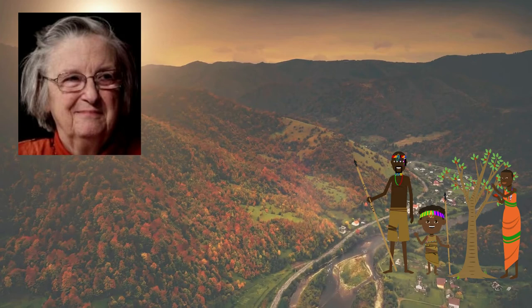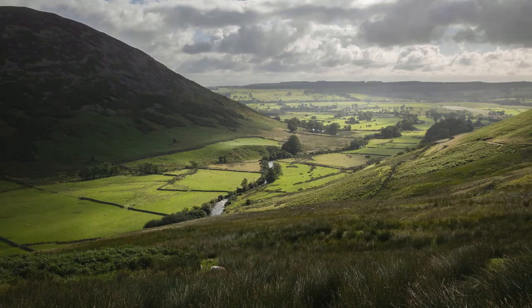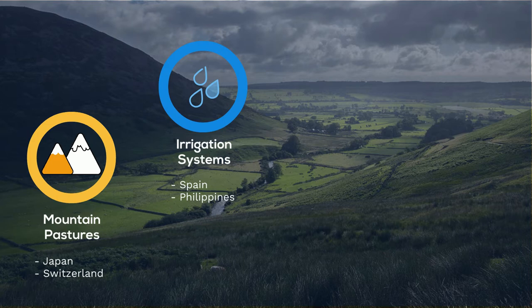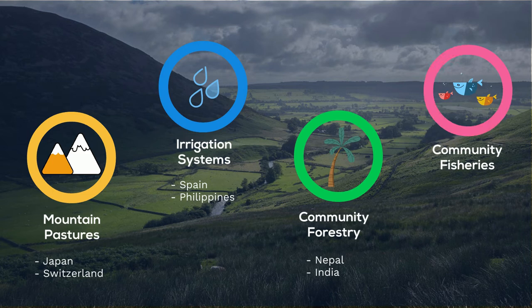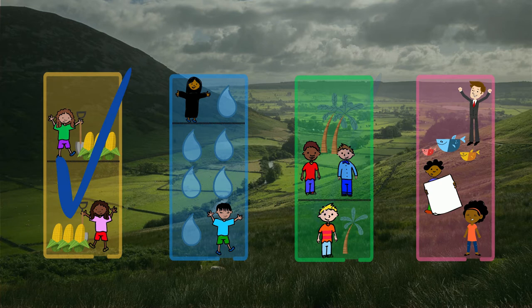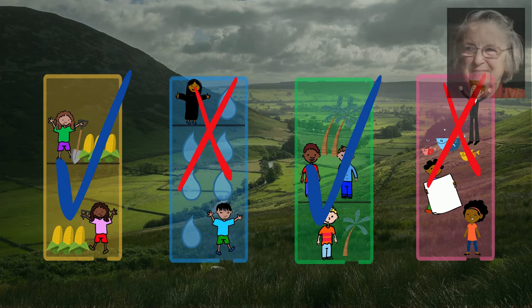Some of her fieldwork sites included the pasture lands of Japan and Switzerland, irrigation canal systems in Spain and the Philippines, the community forests of Nepal and India, and the community fisheries in Canada and Sri Lanka. In all these places, communities had designed certain rules and strategies to govern their resources, but some governance systems had been more successful than others in protecting the resource. Ostrom identified the common principles that made some governance systems more successful than others.